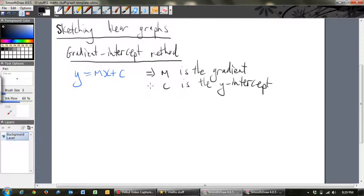And so what the gradient intercept method says is that you look at the equation, you know the gradient, you know the y-intercept while looking at the equation, and you start at the y-intercept, you plot that point, and then you use the rise and the run of the gradient to plot a second point on the line, and you draw a line through them.